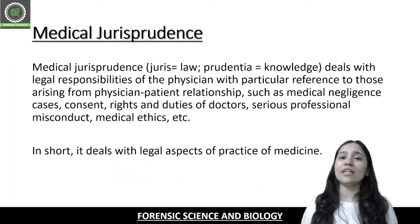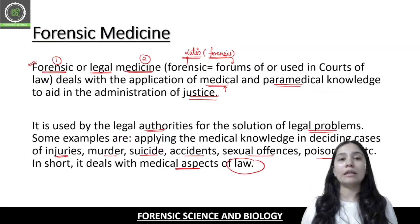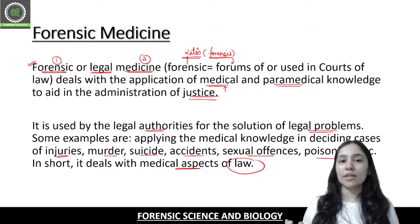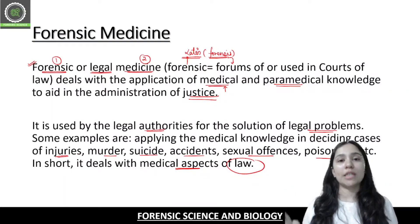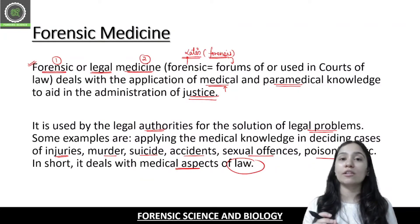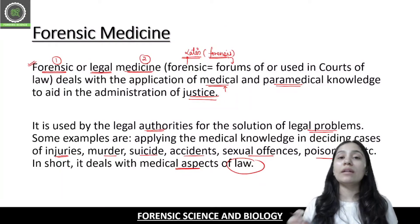Through forensic medicine, you can detect the time since death, the condition of death, and the real cause behind that death. For example, if I am on a highway and I get a heart attack and fall on the road, and a speedy vehicle runs over me — someone might think the person died because of the accident. But when we do forensic analysis, we understand it is not because of the accident; it is because of heart failure. So the real cause of death is determined through forensic medicine.